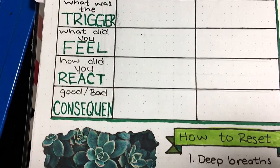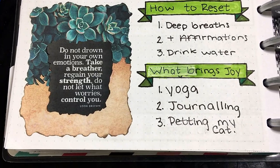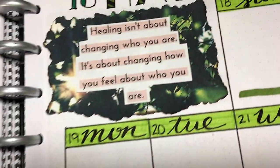The quote in the left-hand corner also got cut off, but it reads, do not drown in your own emotions. Take a breather, regain your strength, do not let your worries control you. In other words, hakuna matata.